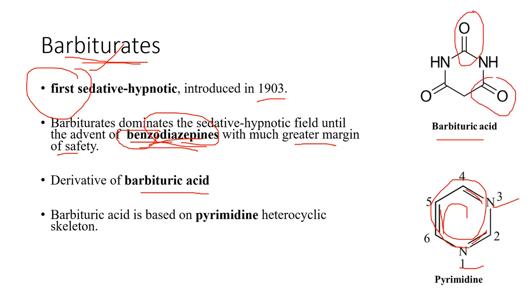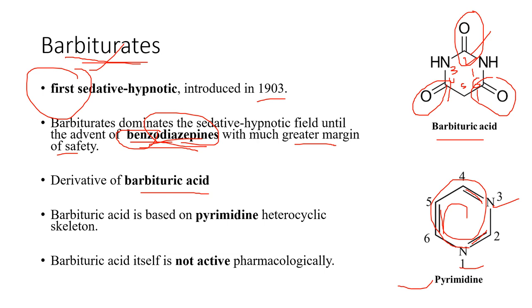There are three unsaturations in the barbituric acid structure due to the addition of oxygen at positions two, four, and six. As homework, write the IUPAC name based on the pyrimidine ring with oxygens at positions 2, 4, and 6. Importantly, barbituric acid is not pharmacologically active — it cannot be used as a hypnotic or sedative until converted into barbiturates.